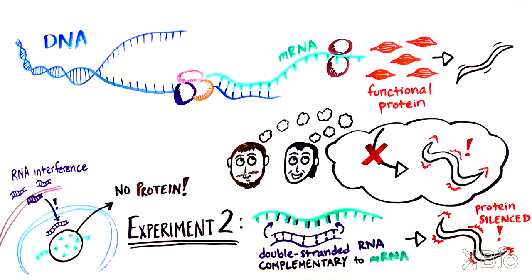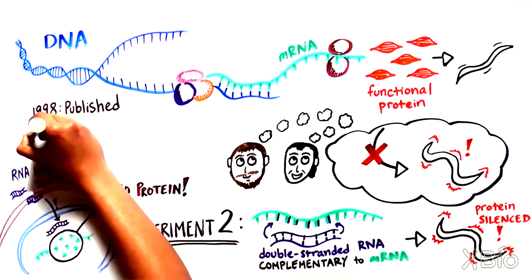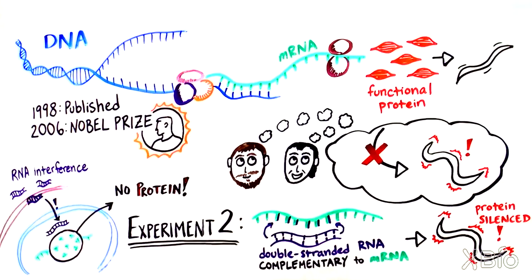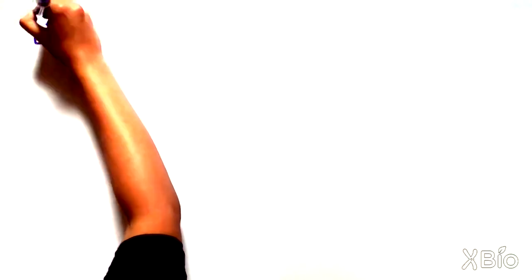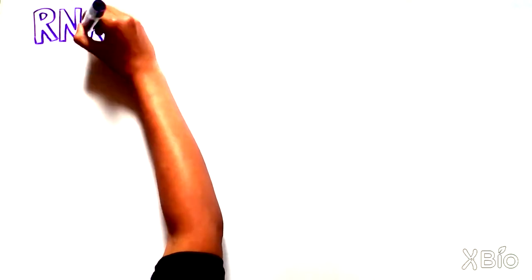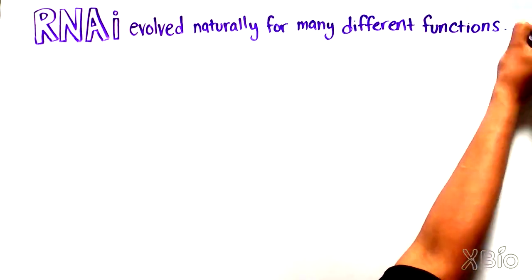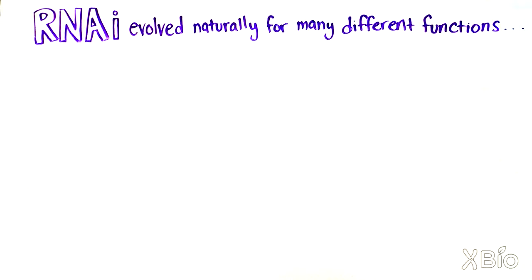Doctors Fire and Mello published their initial findings in 1998 and won the Nobel Prize in Physiology or Medicine in 2006. But why was this discovery so important? In the years that followed, scientists began to understand that RNAi is a process that naturally evolved in many organisms for a variety of functions.